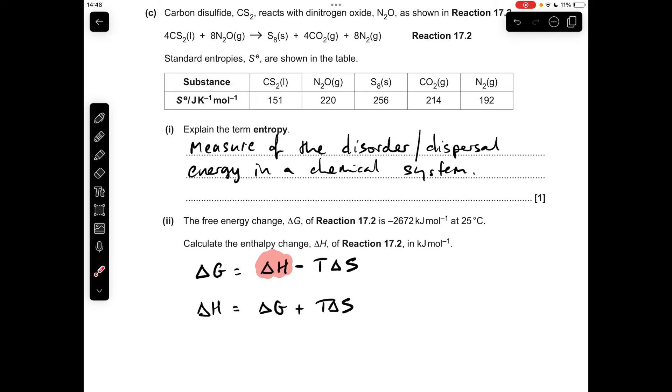ΔS is calculated by taking the entropies of the products minus the entropies of the reactants. I refer to this as the SPAR equation just to help me remember which way around the P and the R go. So ΔS comes out at +284 joules per Kelvin per mole.